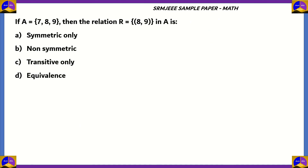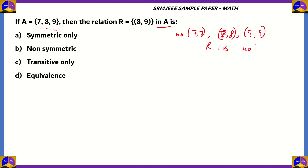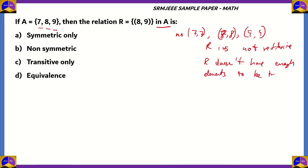Now let's look at a mathematics question. If set A has the terms 7, 8, and 9, the relation R in set A contains the element (8, 9). Is R symmetric only, non-symmetric, transitive only, or equivalence? Since the only term is (8, 9), and there are no elements like (7,7), (8,8), or (9,9), we can safely say R is not reflexive. Also, R does not have enough elements to prove transitivity.